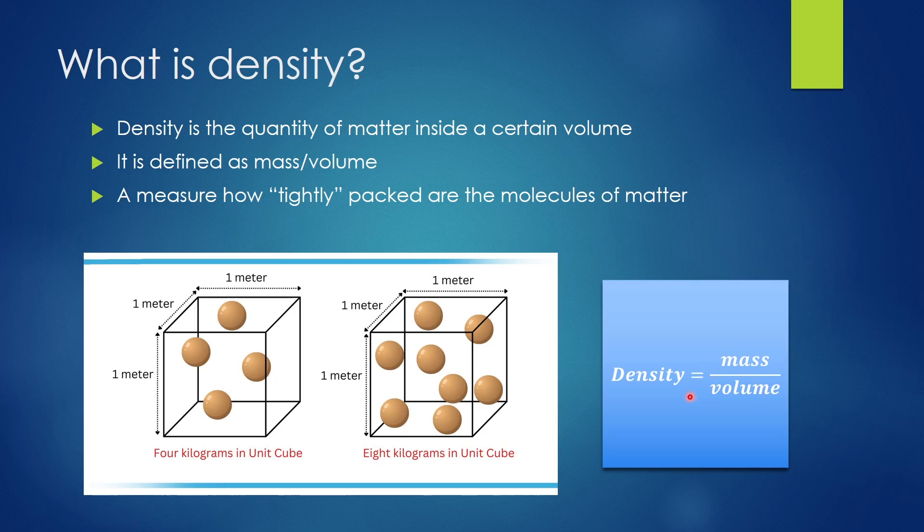Now here we have a cube that is one meter tall, one meter deep, and one meter wide, so the volume of this cube would be one meter cubed. If we say that each of these balls is one kilogram, we can see that the density of this material would be four kilograms per one meter cubed.